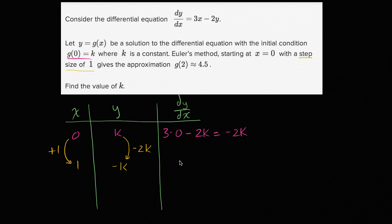And then what is going to be our slope starting at that point? At (1, -k), our slope is going to be 3 times our x, which is 1, minus 2 times our y, which is -k now. And this equals 3 plus 2k.